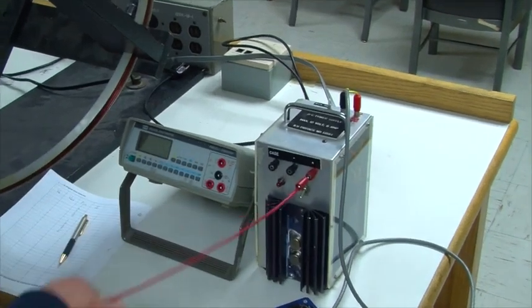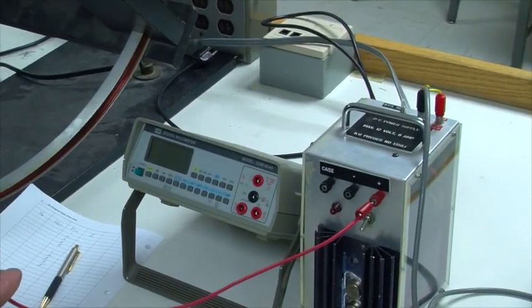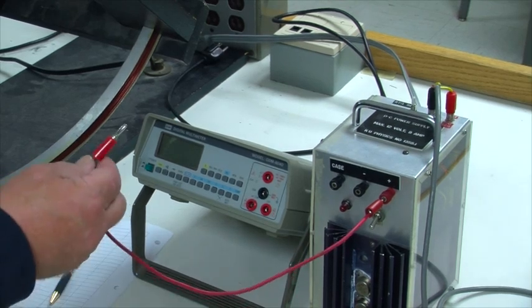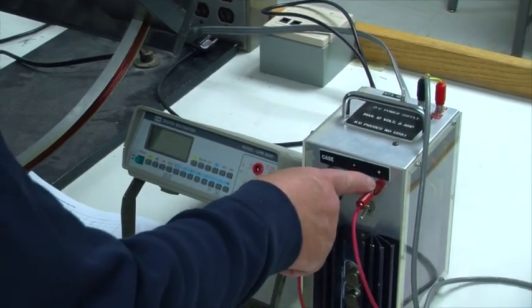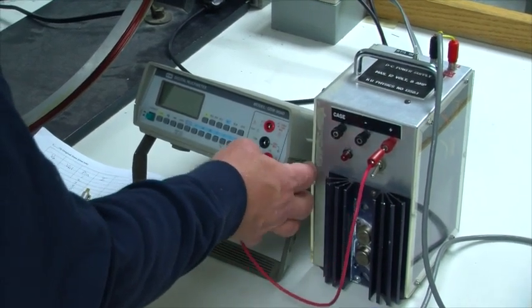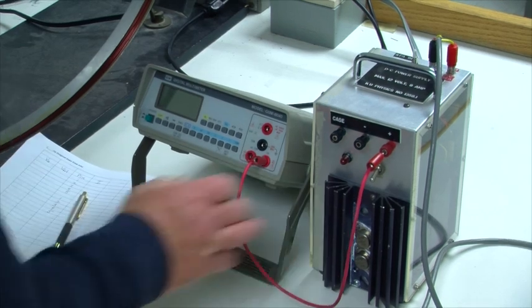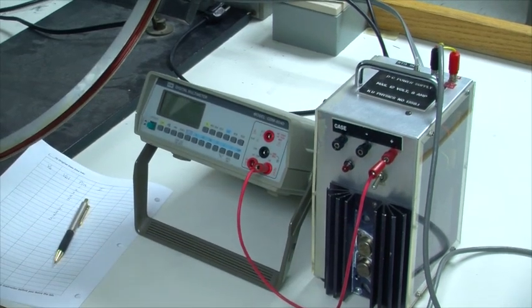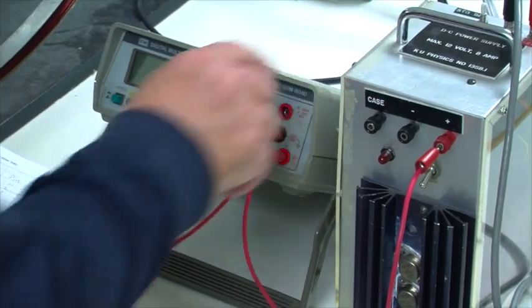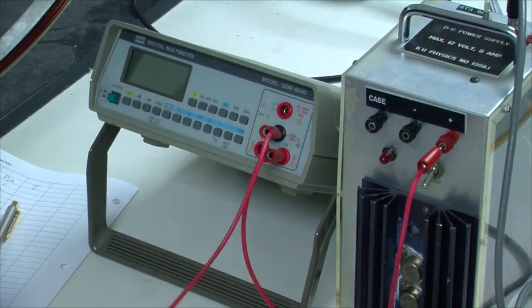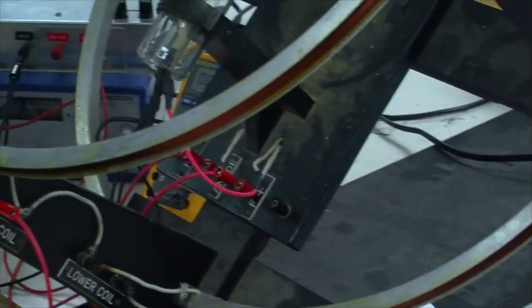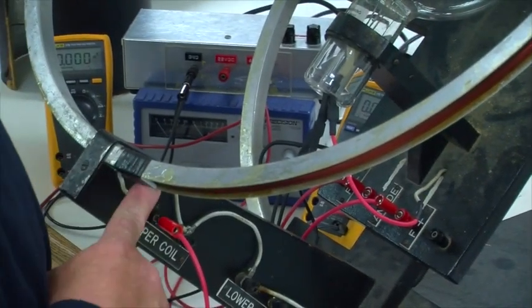Now we need to measure current in this part of the circuit. Current is always measured in series. So from the power supply we go into the 20 amp input of this meter. We come out of the meter and go on over here to the top input on the field coils, this one right here.